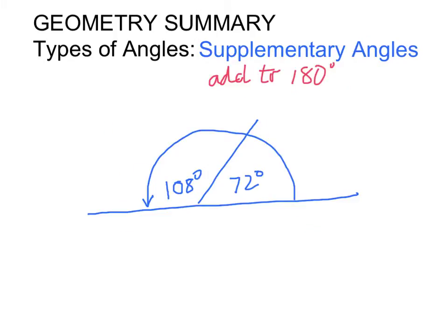Supplementary angles are angles that equal 180. For example, 108 plus 72 equals 180.